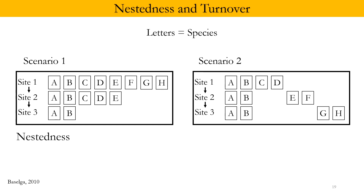Now consider another example: moving from Site 1 to Site 2, we lose two species but gain two different species — C and D are replaced by E and F, while A and B remain constant. The same happens moving from Site 2 to Site 3, where A and B remain but E and F are replaced by G and H. This is a good example of turnover. Nestedness and turnover scenarios can also be examined across time.